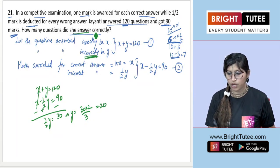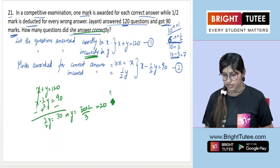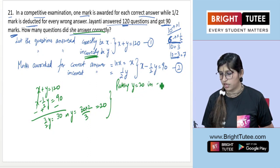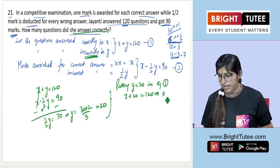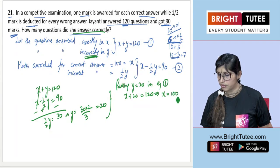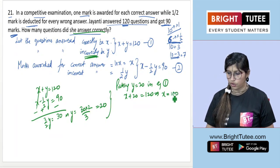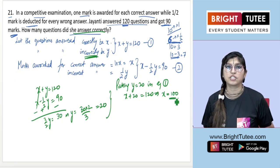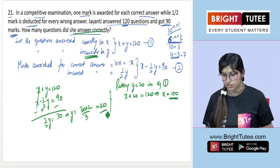y is the number of questions answered incorrectly, but we're looking for correct answers. Since y = 20, putting this in equation 1: x + 20 = 120, which means x = 120 - 20 = 100. So she answered 100 questions correctly and 20 incorrectly.